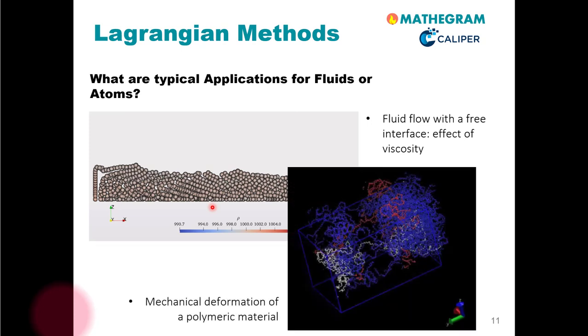Let us also now consider an example where we track atoms in a Lagrangian method. You will see more examples in a minute. Here we showcase the stretching, the deformation, mechanical deformation of a polymeric material. You can see it clearly, the small dots are the atoms that you track. And the lines between them are the chemical bonds that you also simulate with such an MD simulation, as they are called.